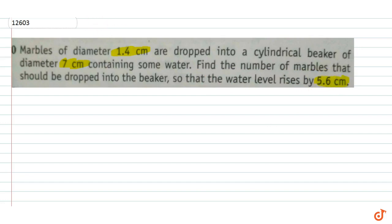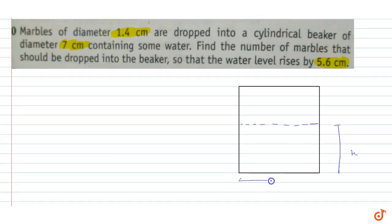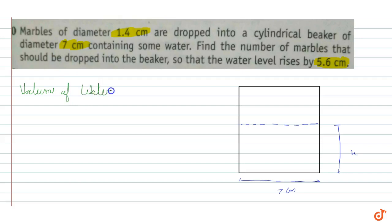What is happening in this question? Initially we have a cylindrical beaker filled up to height h with water. The diameter of the base is 7 cm. First, we can calculate the volume of water, which is equal to πr²h, where r is the radius of the base.